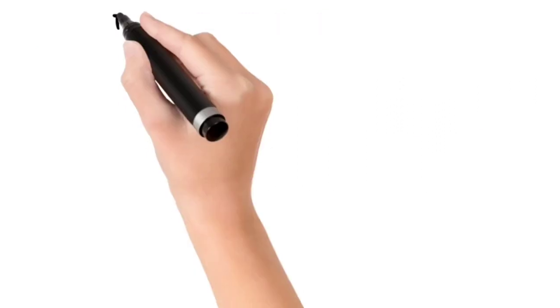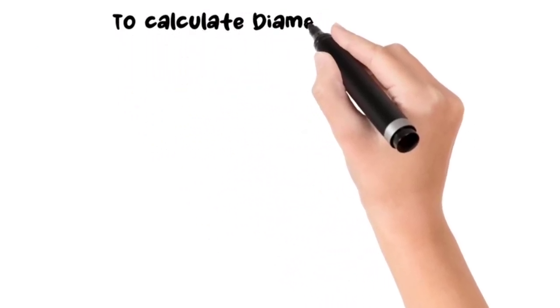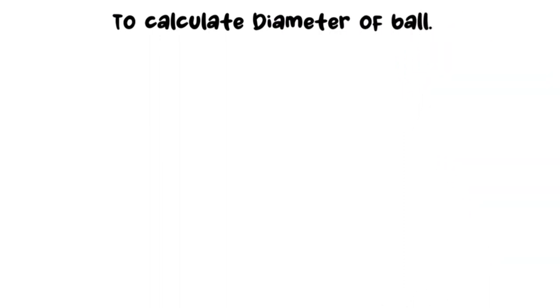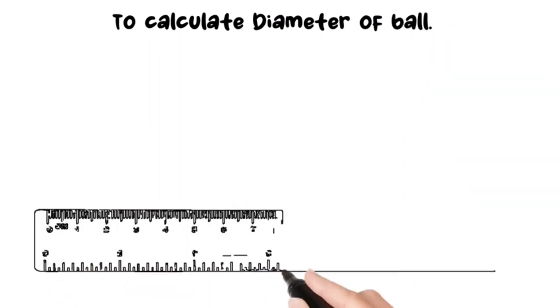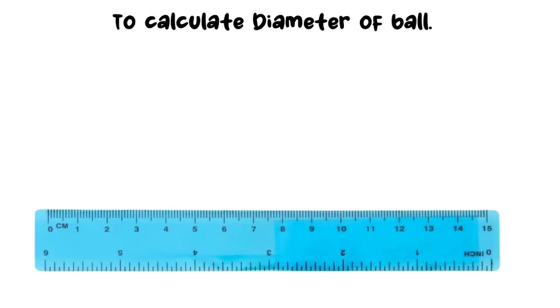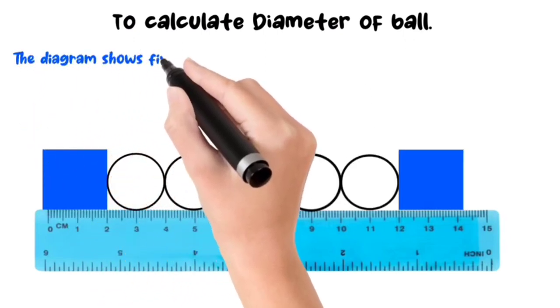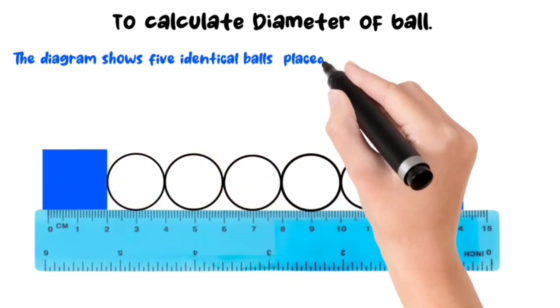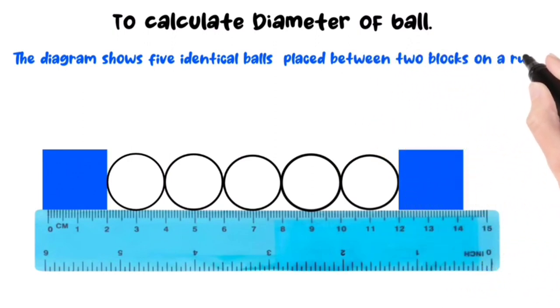The next topic is to calculate the diameter of a ball. Consider the image here. The diagram shows five identical balls placed between two blocks on a ruler.